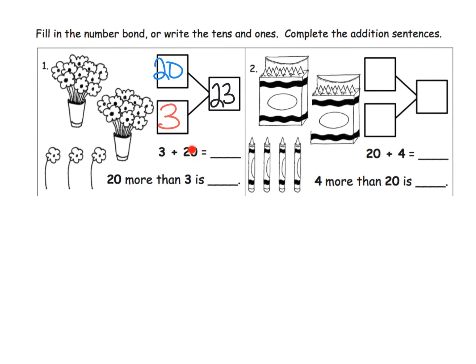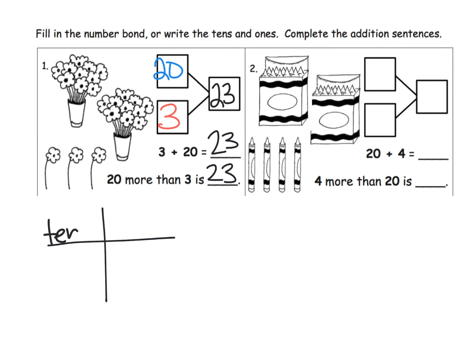Another way to think of this is three ones plus 20, so 3 plus 20 is 23. Another way we could think of this is '20 more than 3' — here's your 3, plus 20 more, and that's 23 as well. Don't forget we can also show this as tens and ones: two tens and three ones. So we have a variety of ways to represent this number.